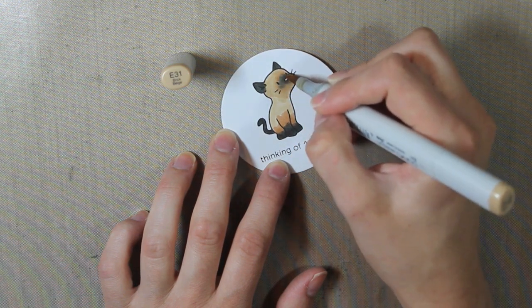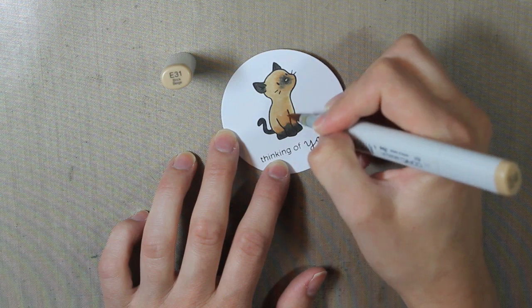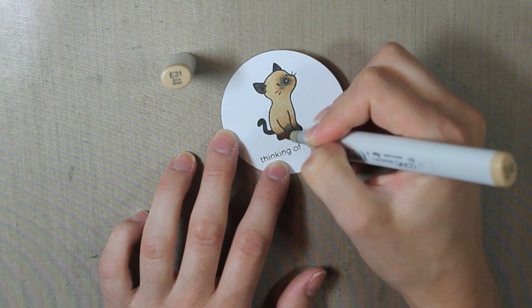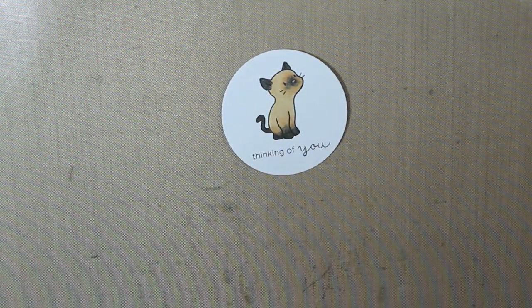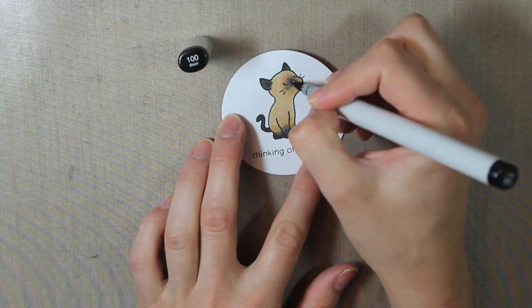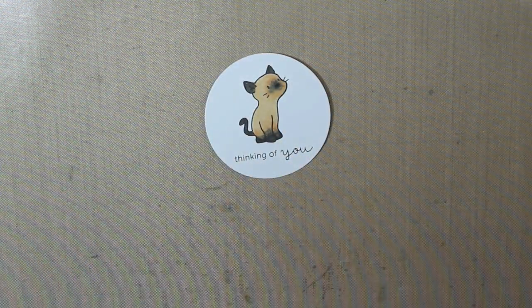And then blend everything with the E31 once again. And if you don't like the way that it looks, just keep blending it with your markers. The color will eventually fade out if the black is a little bit too dark for you. And then I colored in the nose with the 100 black.